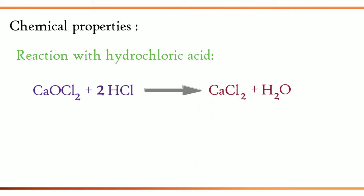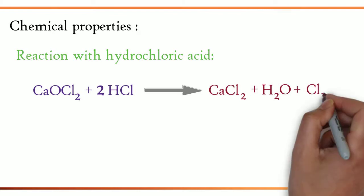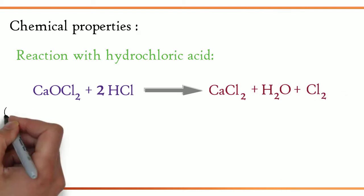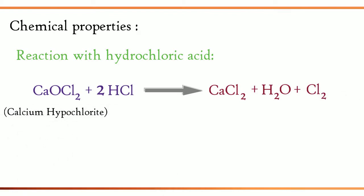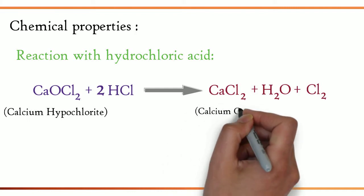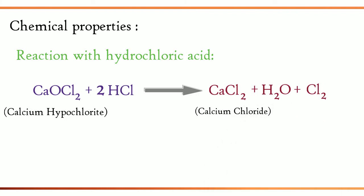CaCl2 plus H2O plus Cl2. When calcium hypochlorite reacts with hydrochloric acid, it will produce calcium chloride, water, and chlorine.